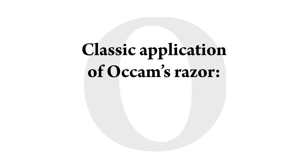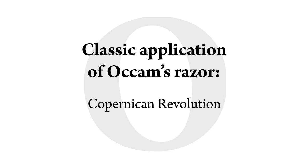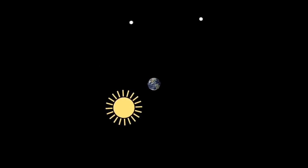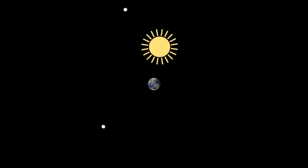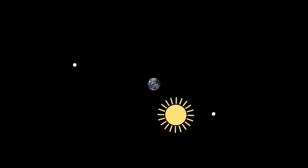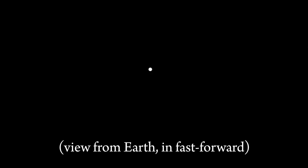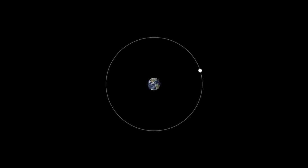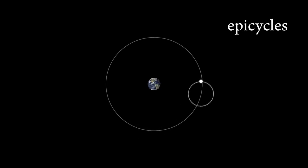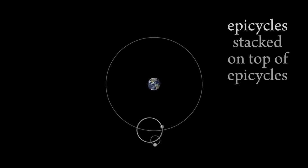The classic application of Occam's Razor was Copernicus. The ancients believed that the sun, stars, and planets revolved around the Earth. But astronomers noticed that the planets would speed up and slow down, and sometimes they'd even turn around and go backward in the sky. It was thought that not only does a planet go around the Earth, it must also follow smaller motions called epicycles. As measurements improved, more epicycles had to be added in order to predict exactly what a planet would do.